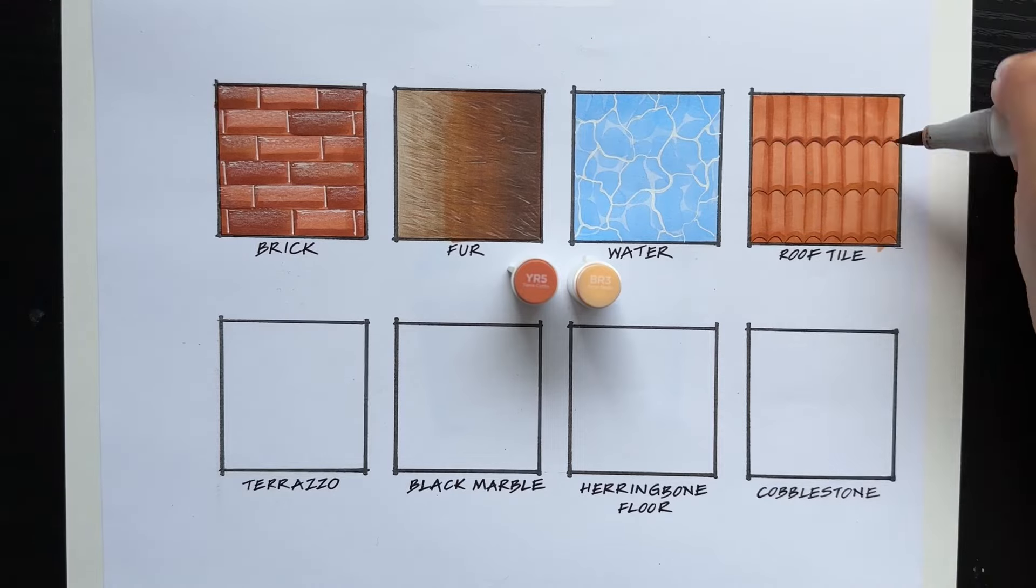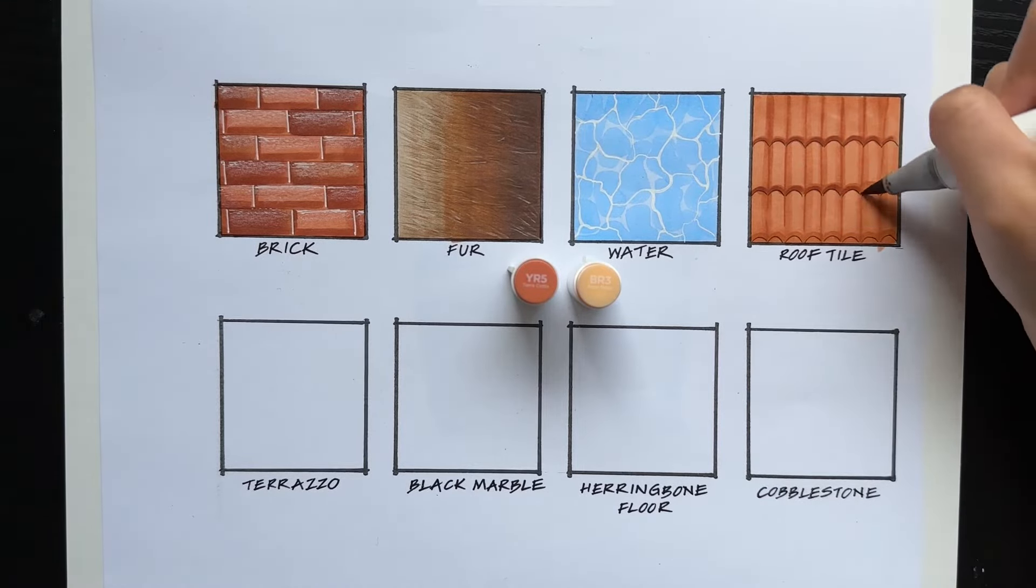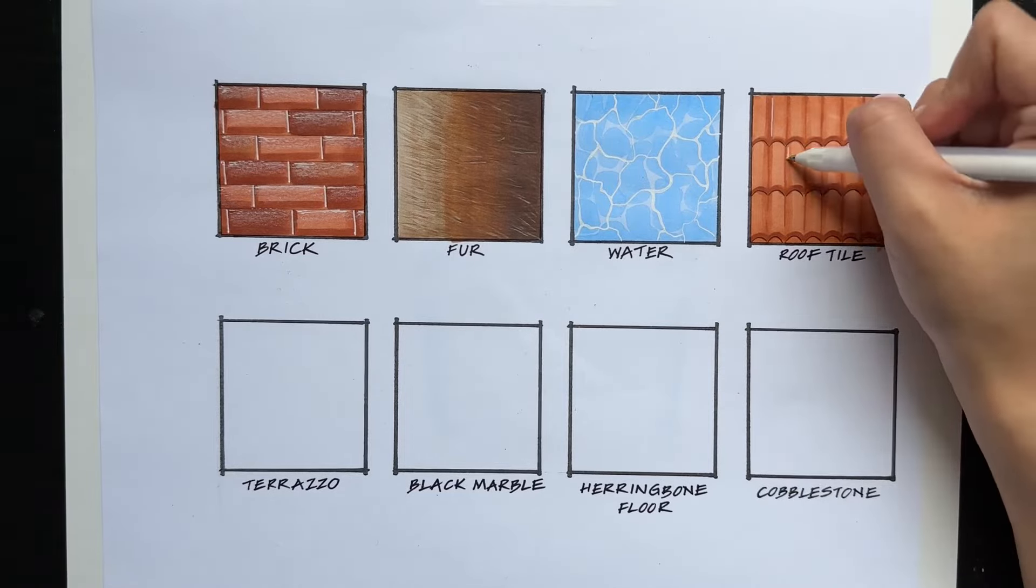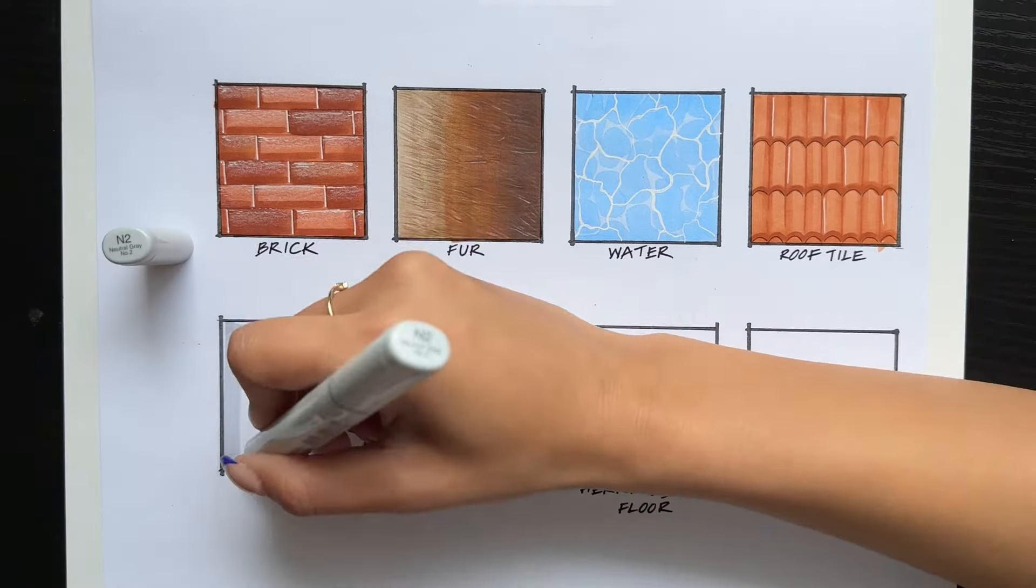Lastly, I'm taking the YR5 again and adding some shadows to these semicircles. And then going in with a white gel pen to add a bit of highlight to certain tiles.